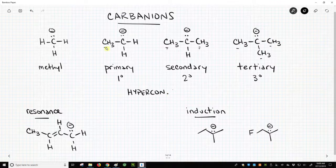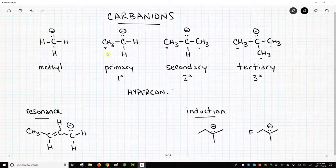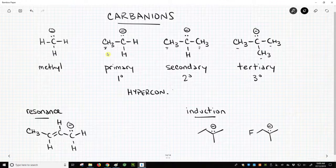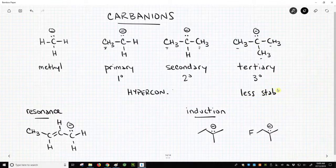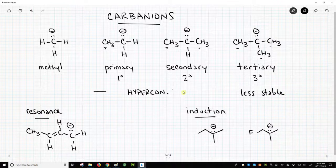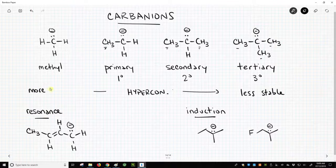Through hyperconjugation, these attached carbon groups feed in electron density. That feeding of electron density is good for a carbocation that has a positive charge. It's bad news for a negative charge. So these carbanions get less stable as we go across this row, and that makes the methyl carbanion more stable.